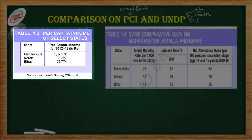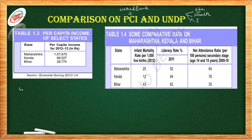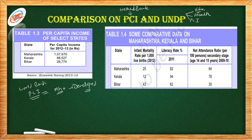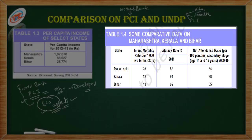Kerala's per capita income is 88,527 rupees, whereas Bihar's is 28,774 rupees. If we consider the World Bank criteria that goes with per capita income, according to that, we will see Maharashtra as the most developed state. World Bank focuses only on economic development.